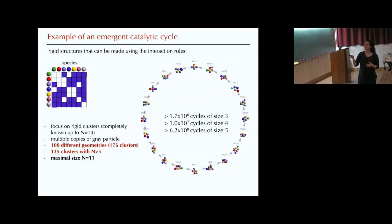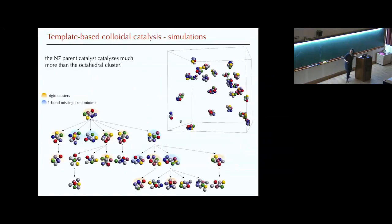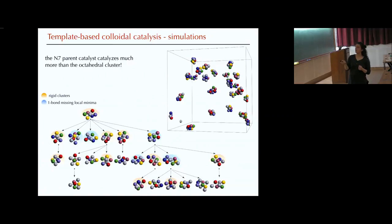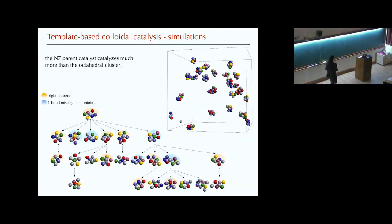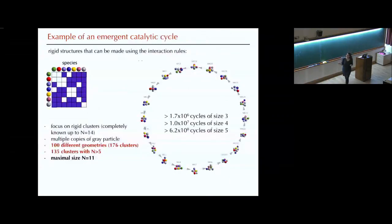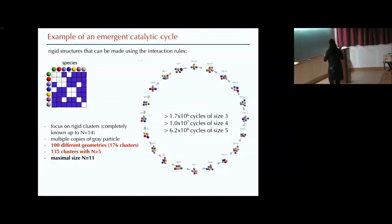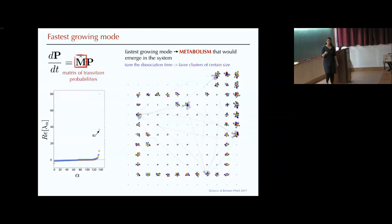We can also look at these catalytic cycles which we see emerging. In a small simulation, we started with our original catalyst, which catalyzed formation of something that was a local minimum — not even a ground state — but that one catalyzed formation of a chiral pair. We've done larger simulations where we can see more cycles being formed. Because we have these results, apart from simulations we can enumerate all the different cycles that can be formed of different sizes, find the maximum size, and compute the matrix of transition probabilities. Solving this eigenvalue problem and looking at the mode with the largest eigenvalue gives the fastest growing mode — this metabolic kind of behavior.